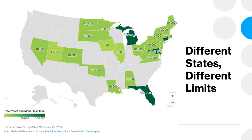The biggest question that arises out of these varying regulations is: should total yeast and mold testing be performed in the cannabis industry? My personal opinion is that we should move away from total quantification tests such as total yeast and mold, and instead move towards testing for more pathogenic species — those things that are known to be harmful and dangerous. Let's keep the total yeast and mold testing because it's a good indicator for how clean the process was, but let's not make that determine whether or not a product passes or fails.